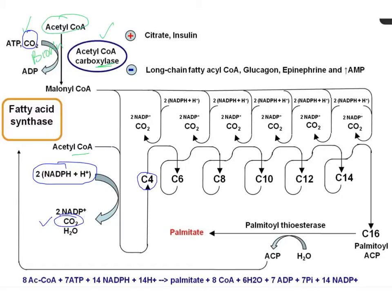This four-carbon molecule undergoes repeated spiral cycles: condensation/decarboxylation, reduction, dehydration, and another reduction. In each spiral, malonyl-CoA condenses with the growing chain, one molecule of CO₂ is released (from the incoming malonyl-CoA), and two molecules of NADPH+H⁺ are consumed — one by the first reductase and one by enoyl-CoA reductase.